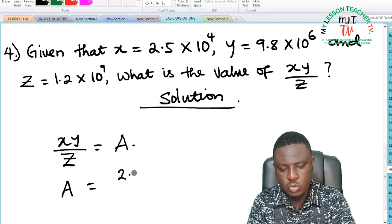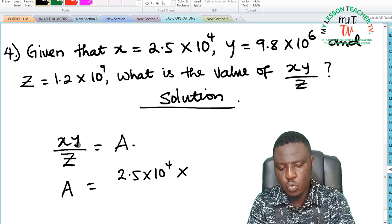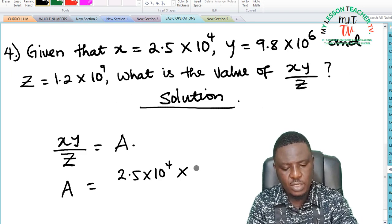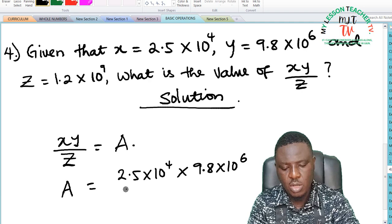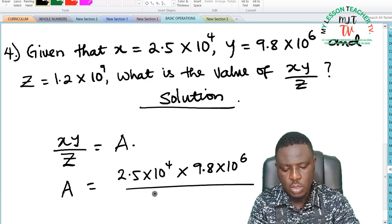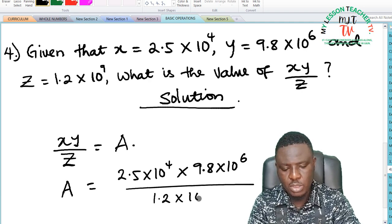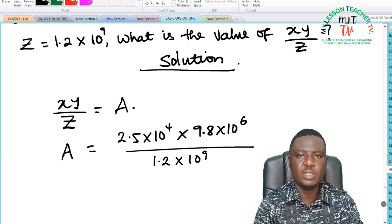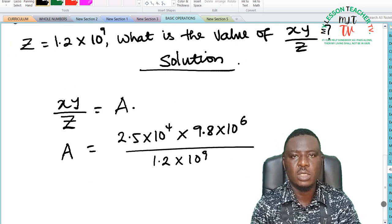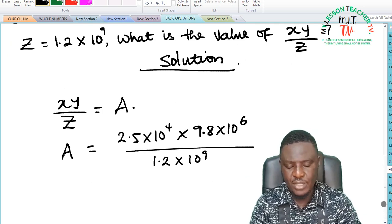So A now becomes, what is x? x is given as 2.5 times 10 raised to the power of 4 times y, and y is given as 9.8 times 10 raised to the power of 6, all divided by z, which is 1.2 times 10 raised to the power of 9. So you simplify this further based on what we have learned on standard forms and you arrive at your answer.